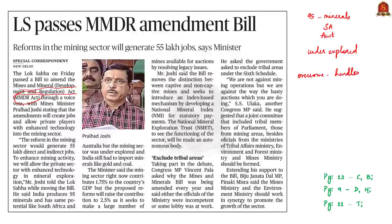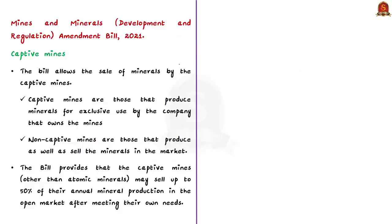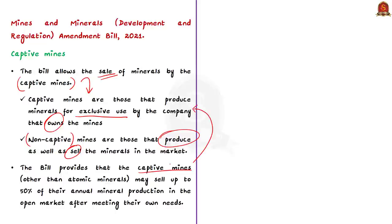For the first time, this bill allows the sale of minerals by captive mines. Captive mines are those that produce minerals for exclusive use by the company that owns them, while non-captive mines produce as well as sell minerals in the market. As per this bill, captive mines may sell up to 50 percent of their annual mineral production in the open market after meeting their own needs. This bill applies to all captive mines except atomic minerals, and the central government can increase this threshold through a notification.